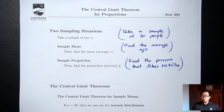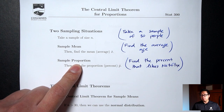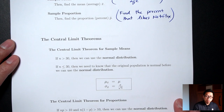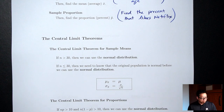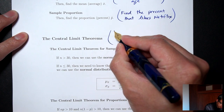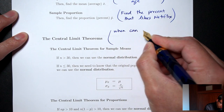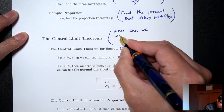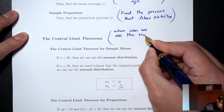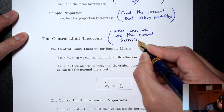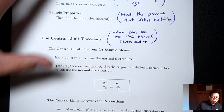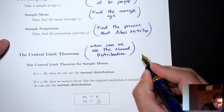The mean situation was covered in the last lecture, so the new situation in this lecture is the proportion situation. The central limit theorems tell you when you're allowed to use the normal distribution — in other words, when can we draw this picture that we've been drawing for every single situation?